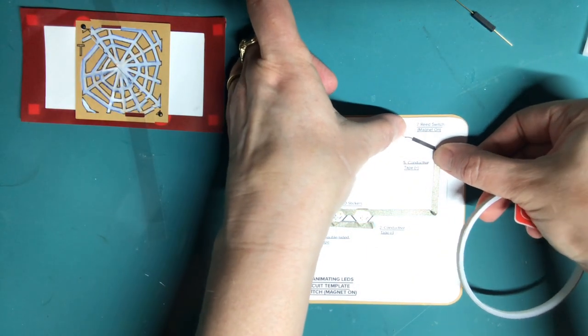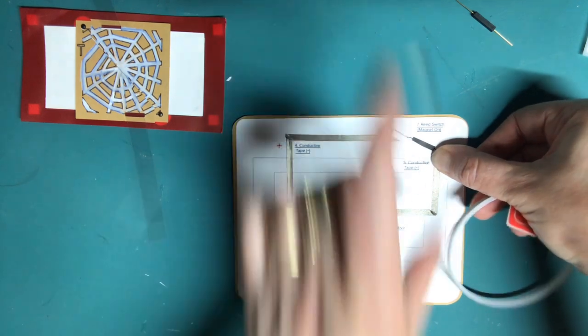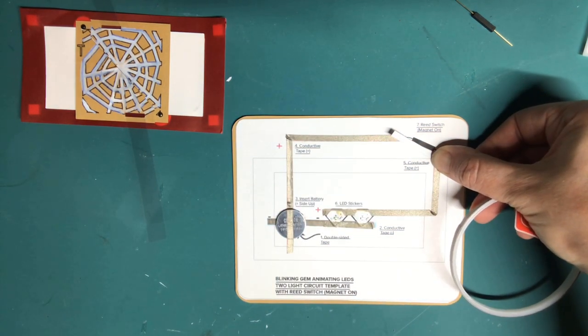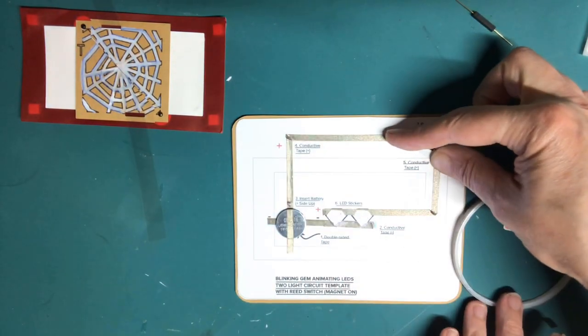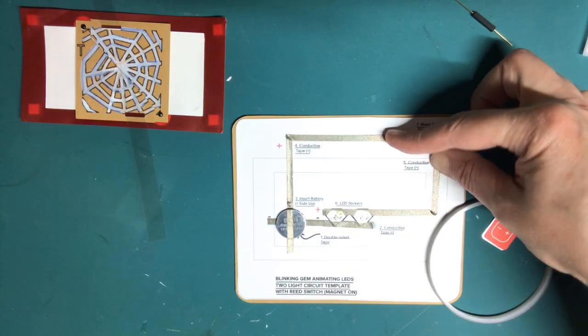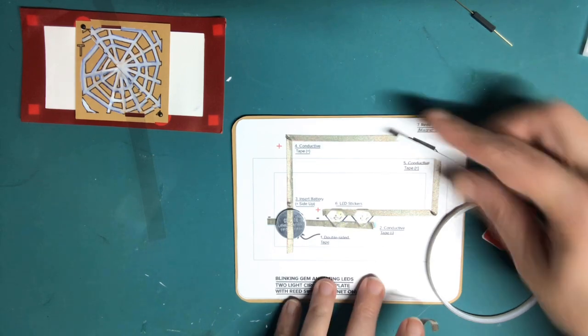To test your circuit to make sure the LEDs are working, hold a piece of conductive fabric tape over the gap where the reed switch will be going. Make sure that it's touching both parts of the positive lead. If your circuit is working, your LEDs should be blinking or glowing.